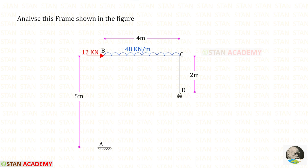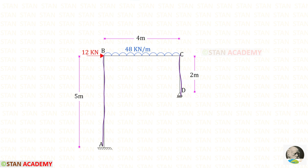Hello everyone. Today we are going to analyze this frame using the consistent deformation method. In this frame there are two columns, column AB and column CED, and there is a beam BC. In both of the columns there is no load. In the beam BC we have a uniformly distributed load of 48 kN per meter, acting for the whole span.